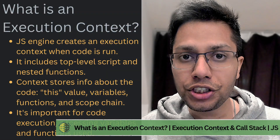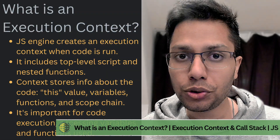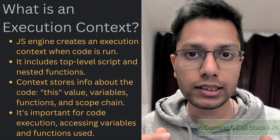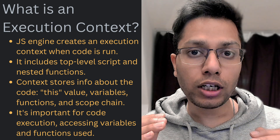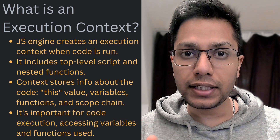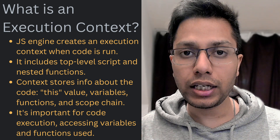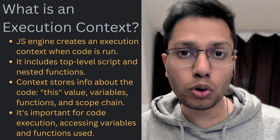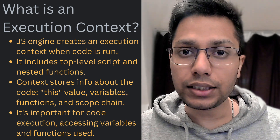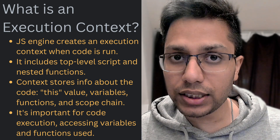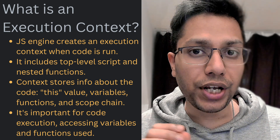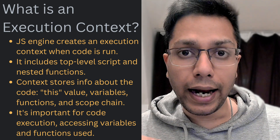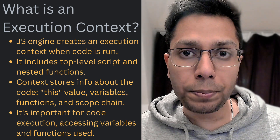When we run any JS code, the engine creates an execution context from the top level or global script down to every nested function in our code. This context stores information about the code such as the value of the this keyword, the variables and the functions declared within it, and the scope chain.